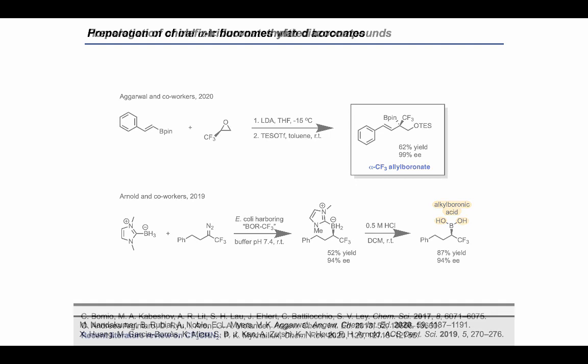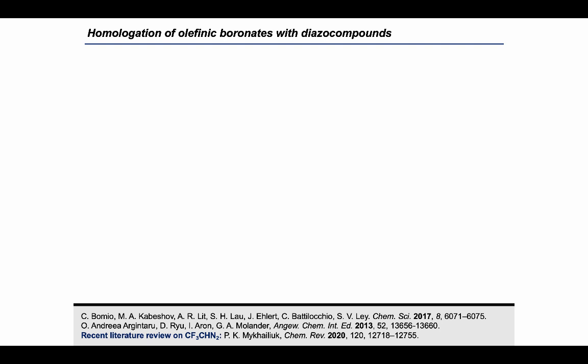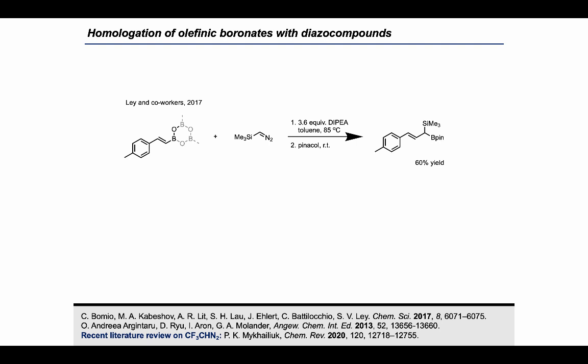In the literature, there are several examples of diazo compounds engaging in a 1,2-borotropic migration with organoboronates. An example I would like to show here is by the group of Leyen and co-workers, who demonstrated that boroxines, such as this olefinic boroxine, would react in a 1,2-borotropic migration to obtain this alpha-TMS-arylboronate. This TMS-diazomethane is commercially available.